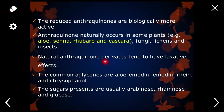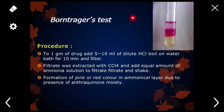Natural anthraquinone derivatives tend to have laxative effects and are mostly used as laxatives. The common aglycones are emodin, aloe-emodin, rhein, and chrysophanol. Sugar molecules present in anthraquinone glycosides are arabinose, rhamnose, and glucose.